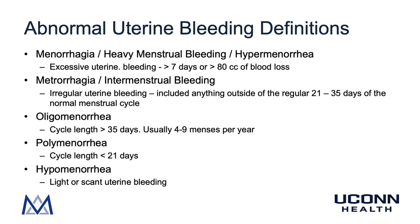Another term previously used to describe metrorrhagia was intermenstrual bleeding. Oligomenorrhea was used to describe a cycle length greater than 35 days; these patients would usually have approximately four to nine menses per year, less than the expected 12. Similarly, polymenorrhea was used to describe a cycle length less than 21 days — these patients would have more than 12 menstrual periods per year. And hypomenorrhea was used to describe light or scant uterine bleeding; commonly these patients would also have somewhat irregular periods.